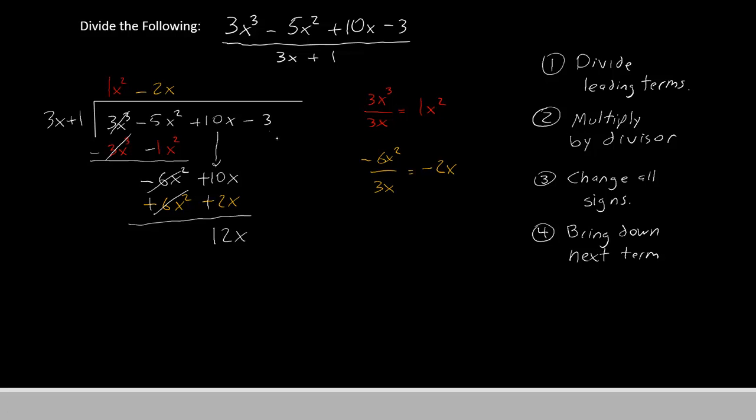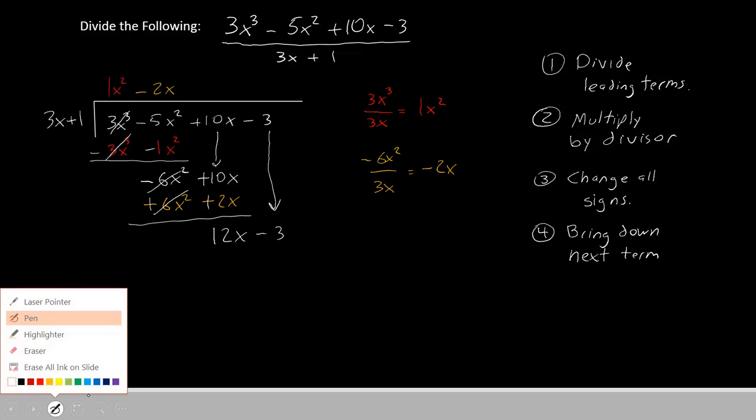Now for the fourth step, bring down the next term. So we'll have 12x minus 3. After we bring down the next term, we go back to the top and divide the leading terms one more time.